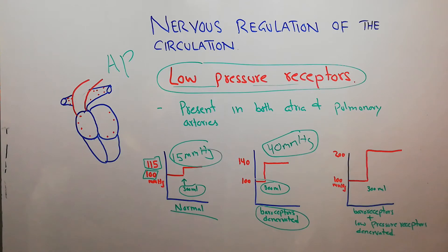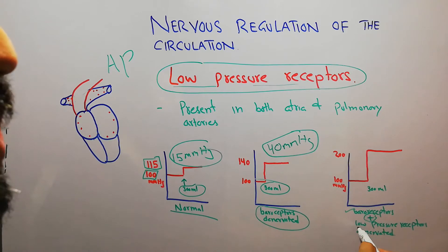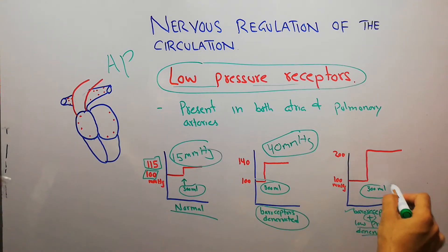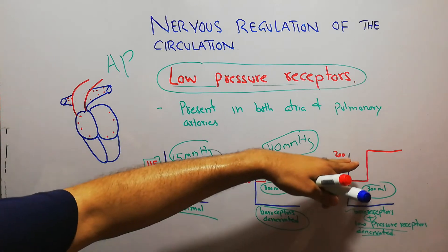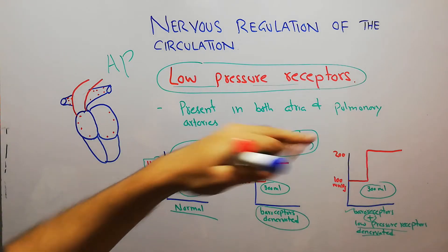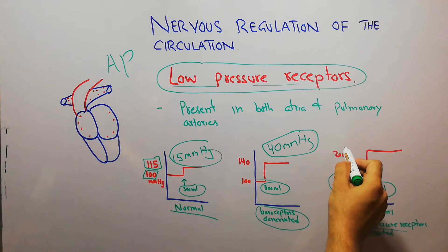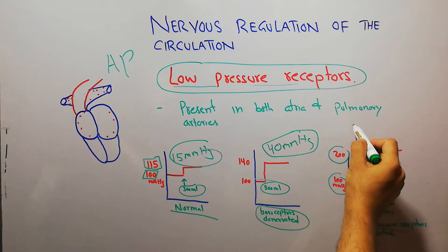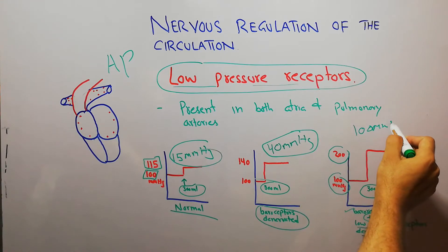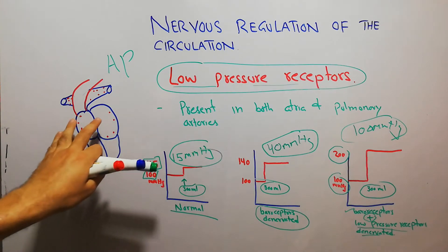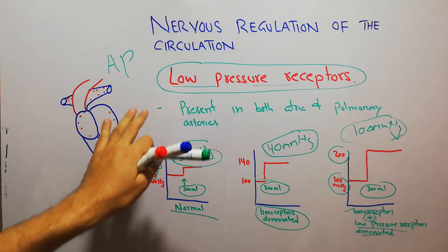Now in this same dog, the low pressure receptors — which are the topic of our discussion — are also denervated. Both the baroreceptors and the low pressure receptors are denervated, and then the same 300 ml of fluid is injected. This time the increase is about 100 mmHg — from a normal of 100 mmHg to 200 mmHg, an increase of around 100 mmHg.